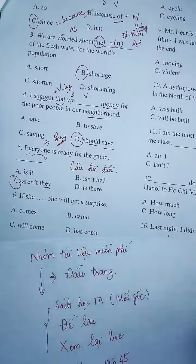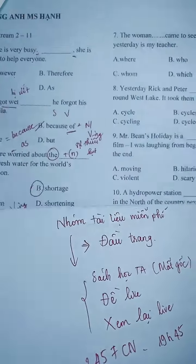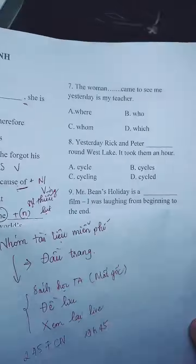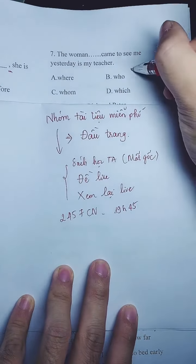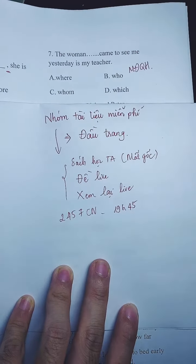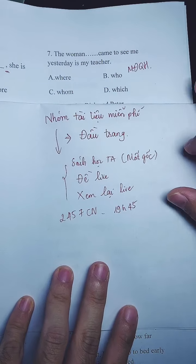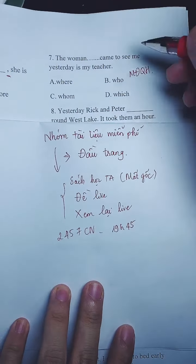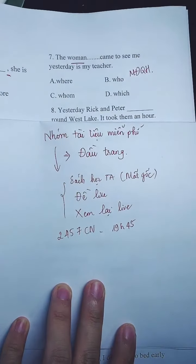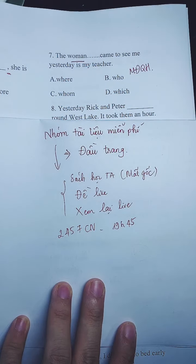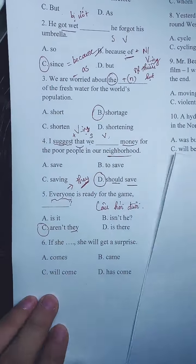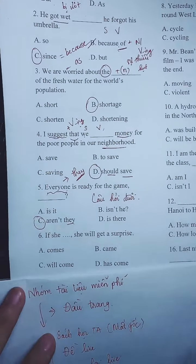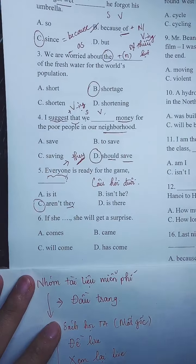Bây giờ qua câu số 7 — câu về mệnh đề quan hệ. Mệnh đề quan hệ chỉ người: 'woman' là người phụ nữ. Nhưng khoan, câu 6 bị bỏ qua mất. Câu 6 ở dưới này. Chúng ta có câu 6 là câu điều kiện. Cấp 2 học lên cấp 3 cũng có học lại. Các bạn cấp 2, cấp 3 đều học được.